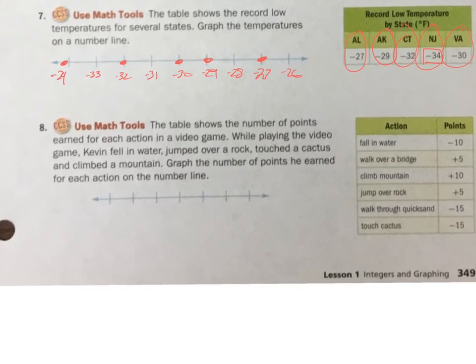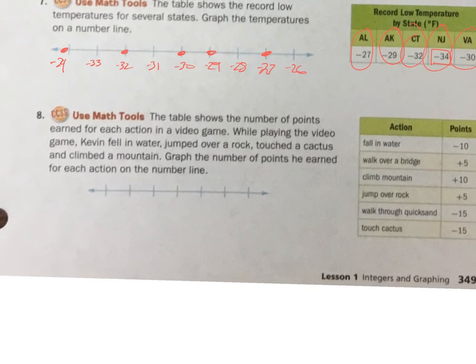All right, 8 is the last one. The table shows the number of points earned for each action in a video game. While playing the video game, Kevin fell in water, jumped over a rock, touched a cactus, climbed on it.